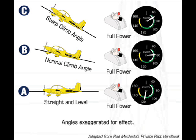Knowing it's extra thrust and not extra lift that is responsible for the climb allows you to draw some interesting conclusions. Anything that causes the engine to produce less power — such as high altitudes, high temperatures, or not applying full power — prevents you from achieving your maximum rate of climb. Airplanes have a specific climb attitude, or steepness of hill, that offers the best of all worlds: optimum climb performance.